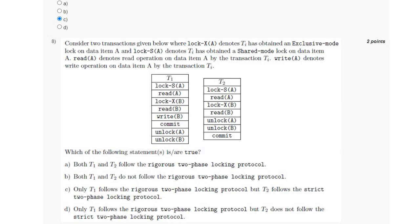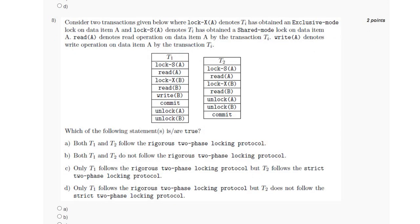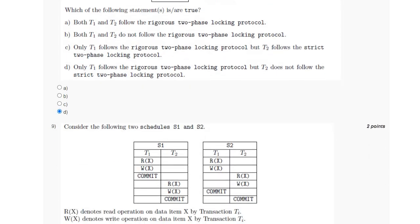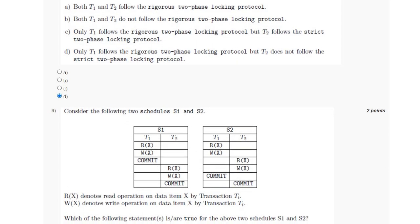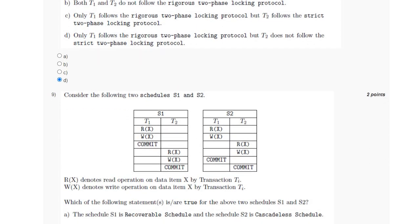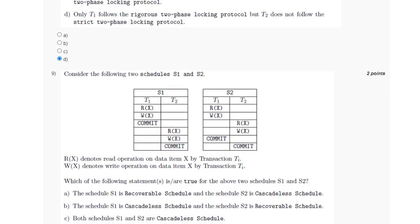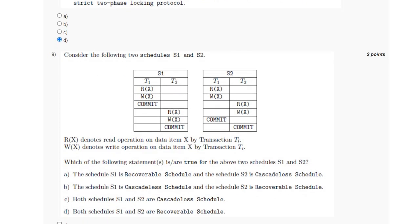Therefore, the answer for question 8 is option D: T1 follows the rigorous two-phase locking protocol but T2 will not follow the strict two-phase locking protocol. For question number nine, we have been given two schedules and have to identify the correct statement about both schedules.